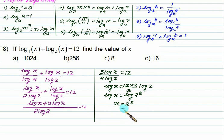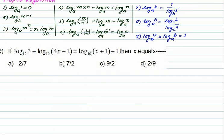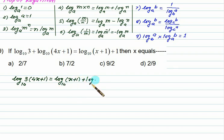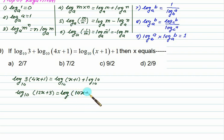So x equals 2 to the power 8, which is 256. Choice B is correct. In the next problem, the expression contains a constant 1, which we rewrite as log 10 to the base 10. The product of the first two terms gives log of (3 times 4x plus 1), and the right-hand side becomes log of (x plus 1) plus log 10. Simplifying, log of (12x plus 3) equals log of (10x plus 10). Eliminating log, we get 12x plus 3 equals 10x plus 10, so 2x equals 7.